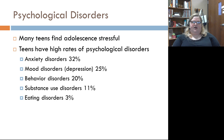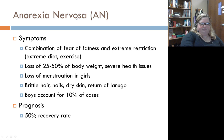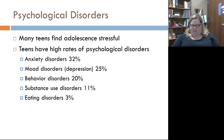That said, adolescents do find this time period very stressful. There are high rates of psychological disorders in adolescence: 32% of teens have some form of anxiety, 25% have a mood disorder like depression, 20% have a behavior disorder, 11% use illicit substances, and 3% have eating disorders. Over a quarter of adolescents experience psychological distress that qualifies as a disorder at some point during adolescence.